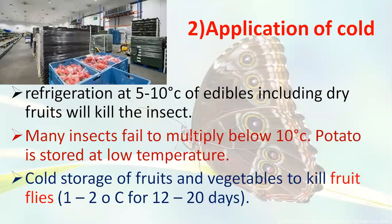The next practice is the application of cold. Refrigeration at zero to 10 degrees Celsius is used to store edible products. Many insects fail to survive or multiply below 10 degrees Celsius because there is not a proper temperature range for their survival. For example, potatoes stored at low temperature will not suffer further infestation from potato tuber moth pests due to the low temperature of 10 degrees Celsius.